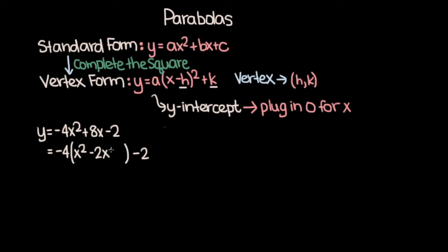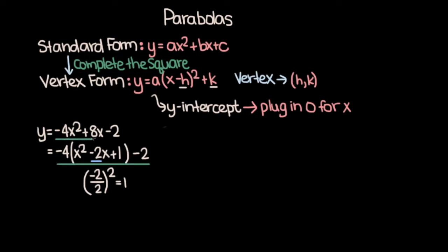Here's the key to this method. We want to find a constant term to put after the negative 2x to make the terms inside the parentheses a perfect square, something in the form of x minus h whole squared. The way you find that term is by taking the coefficient of the x term — in this case negative 2 — dividing by 2, and then squaring that result. So we get negative 2 over 2, which is negative 1, and negative 1 whole squared is 1. So we can add 1 here.